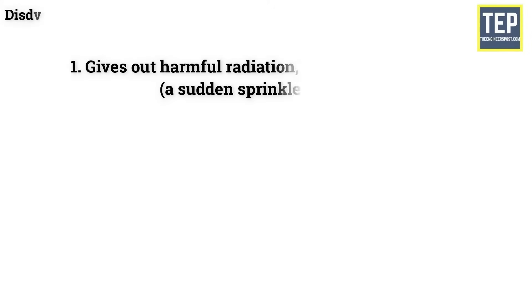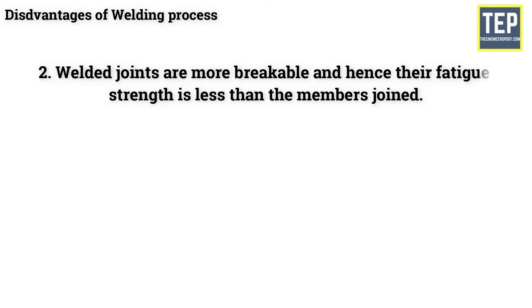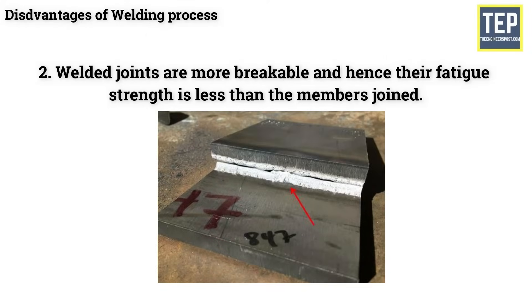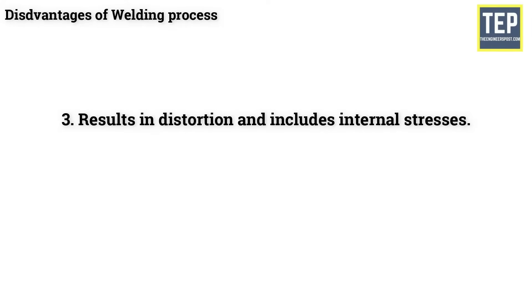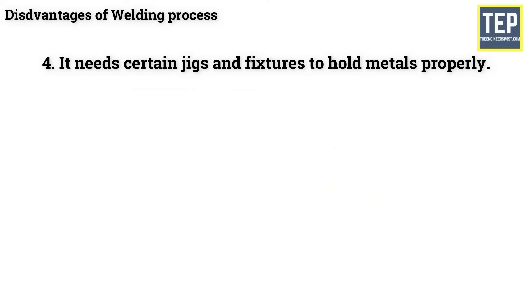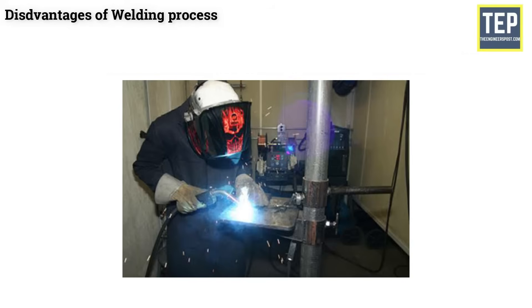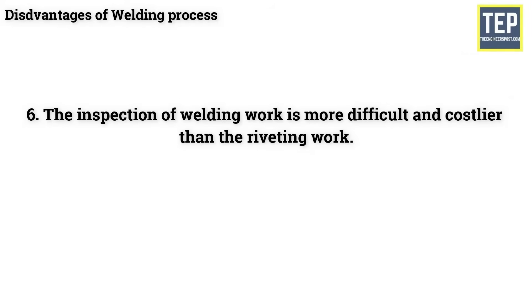The disadvantages of the welding process include: it gives out harmful radiation, fumes, and spatter — a sudden sprinkle of sparks; welded joints are more brittle and their fatigue strength is less than the members joined; it results in distortion and induces internal stresses; it needs certain jigs and fixtures to hold metals properly; skilled workers and electricity are needed; and the inspection of welding work is more difficult and costlier than riveting work.